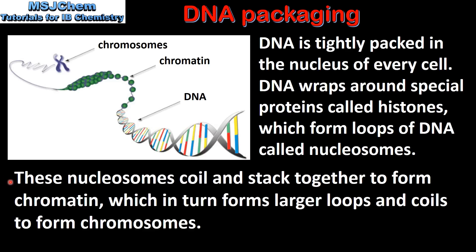These nucleosomes coil and stack together to form chromatin, which in turn forms larger loops and coils to form chromosomes. So DNA wraps around histones to form nucleosomes, which then form chromatin. Chromatin, which is a DNA and protein complex, then goes on to form chromosomes.